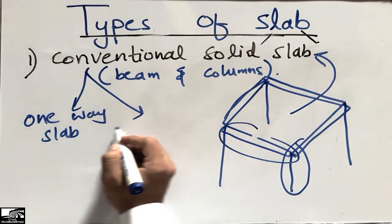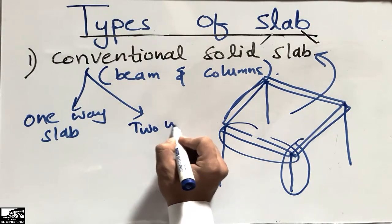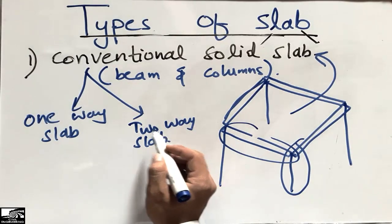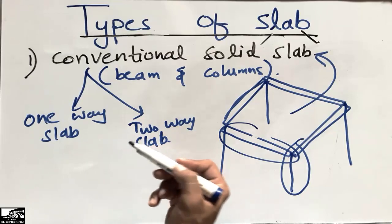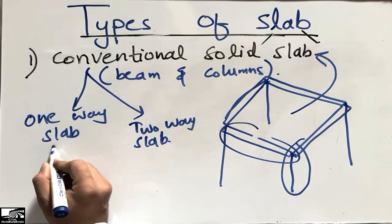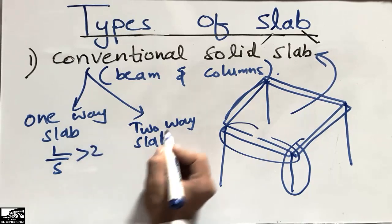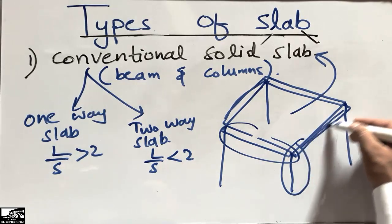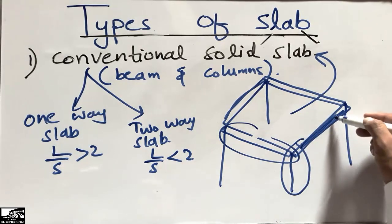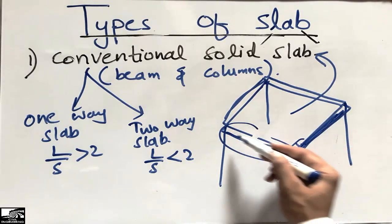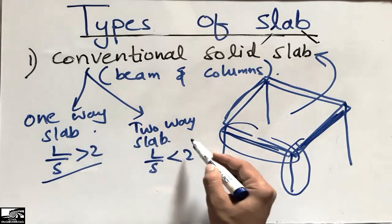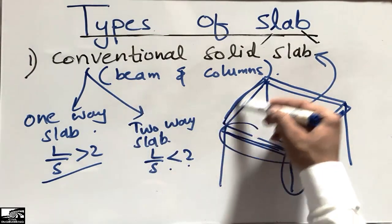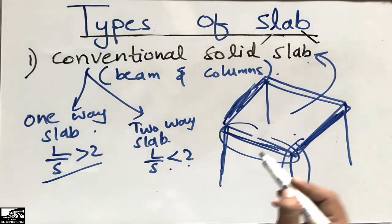There are two classifications of the conventional solid slab: one-way slab and two-way slab. I have uploaded a video on the difference between one-way and two-way slabs — the link is in the description. In a one-way slab, the longer-to-shorter span ratio is greater than two, while in a two-way slab, the longer-to-shorter span ratio is less than two. Both must be supported by beams and columns to be called a conventional solid slab.